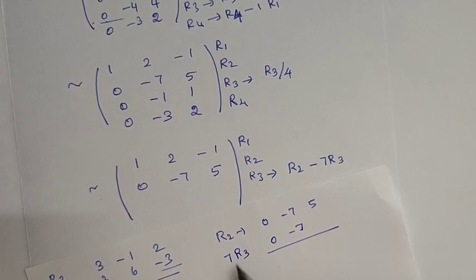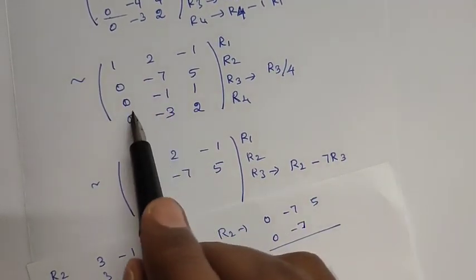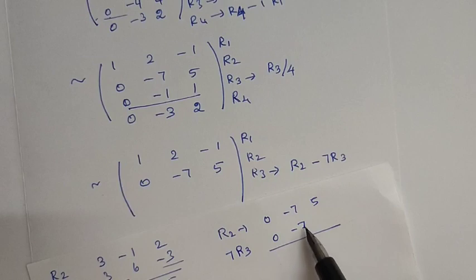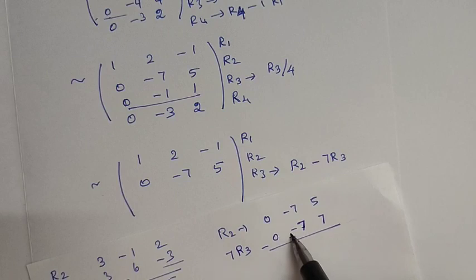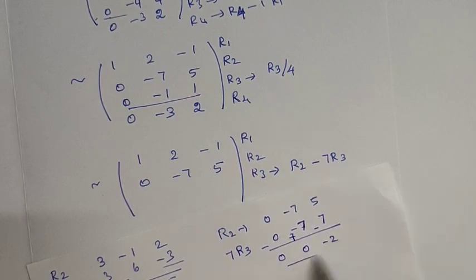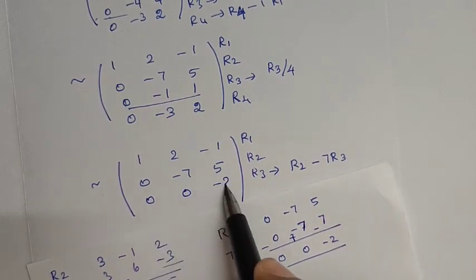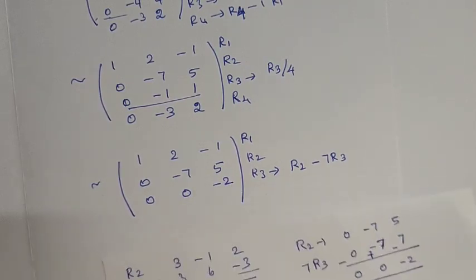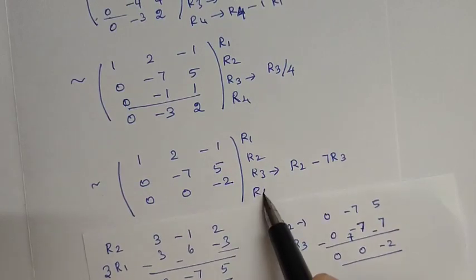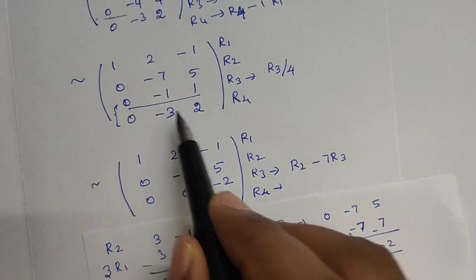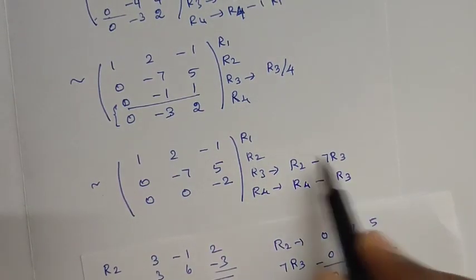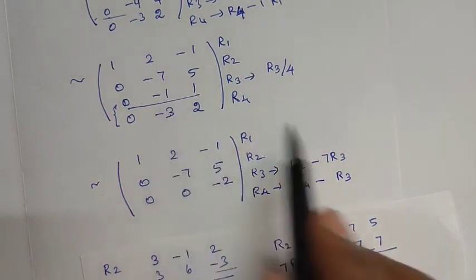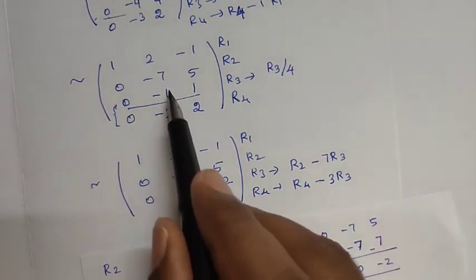So R3 will be updated. R3 is now simplified. We then compute R4 minus R3: R3 minus R3 gives 0, and R3 is reduced to 0.